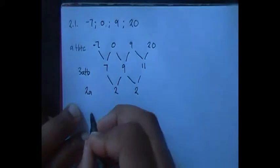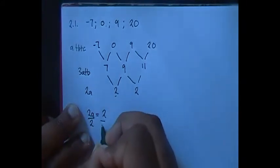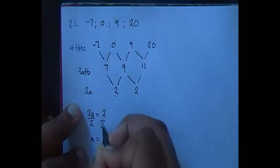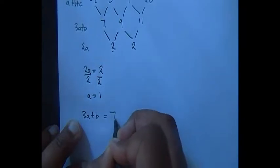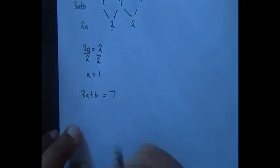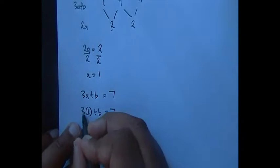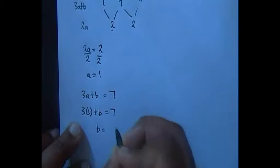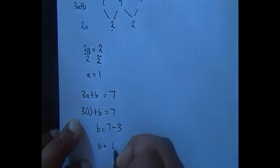We're going to work out the value of A. So 2A is equal to the second common difference, which is 2. Divide both sides by 2, and A is equal to 1. Now we need to find the value of B. So 3A plus B is equal to 7. We know A is 1, so 3 times 1 plus B equals 7. That's 3 plus B equals 7, so B is equal to 7 minus 3, which means B is equal to 4.